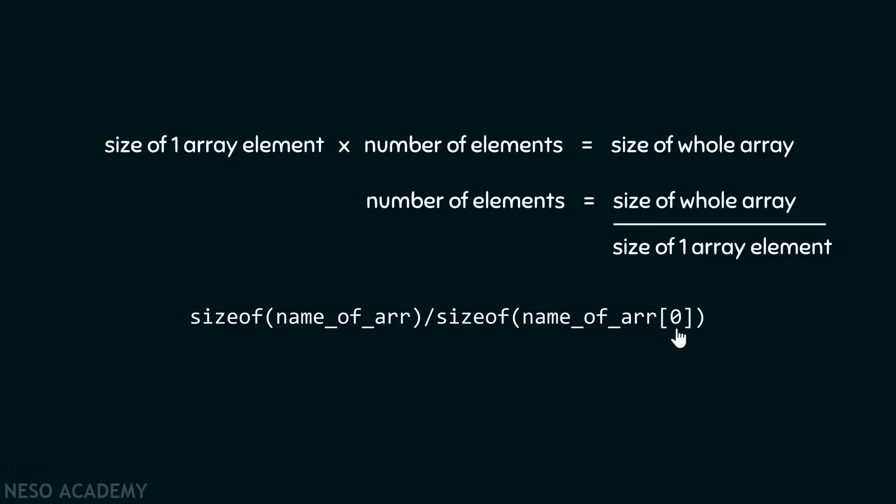For the sake of simplicity, I am mentioning zero over here. You can mention one, two, three, four. It is up to you. And why the index doesn't matter? Because we just want to know size of one element. And it can be any element of the array. But better is to choose zero.